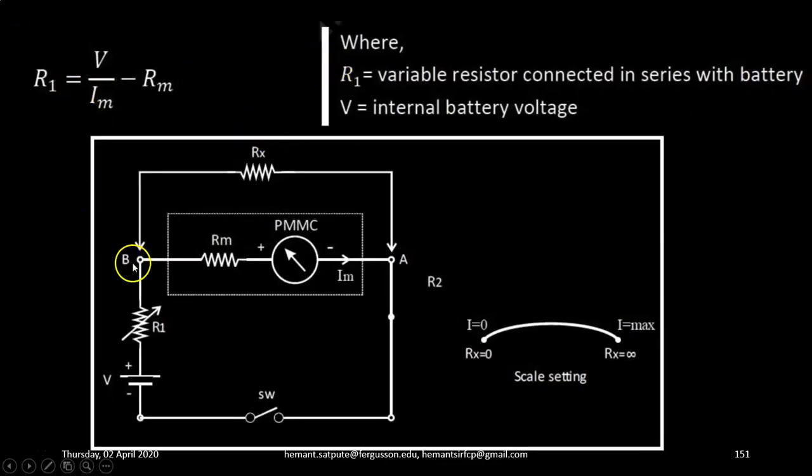The value of this resistance R1 can be calculated by using the formula R1 equals V upon Im minus Rm, where R1 is the variable resistor connected in series with the battery, V is the internal battery voltage, Rm is the meter resistance, and Im is the maximum full scale deflection current which the meter can take.